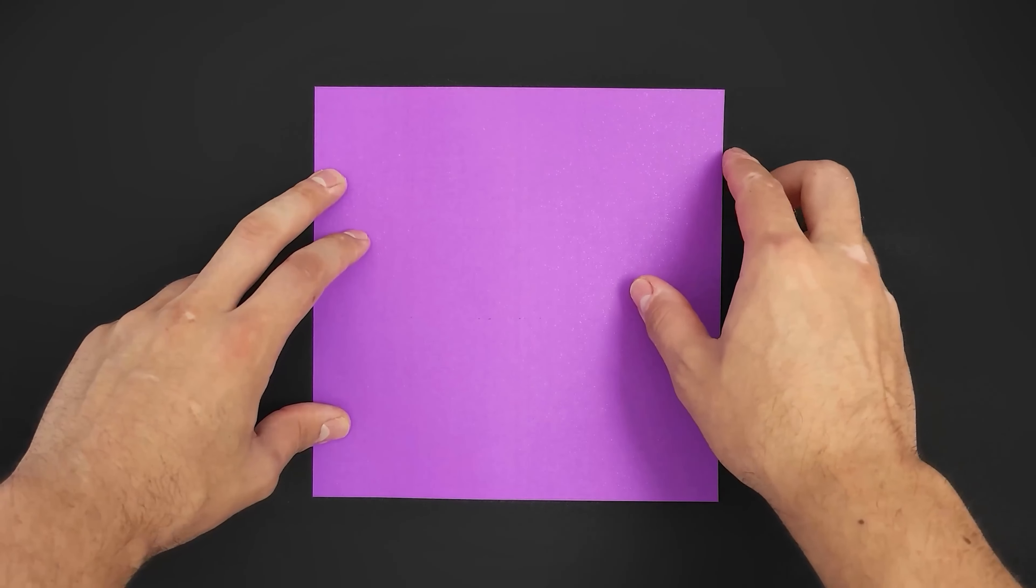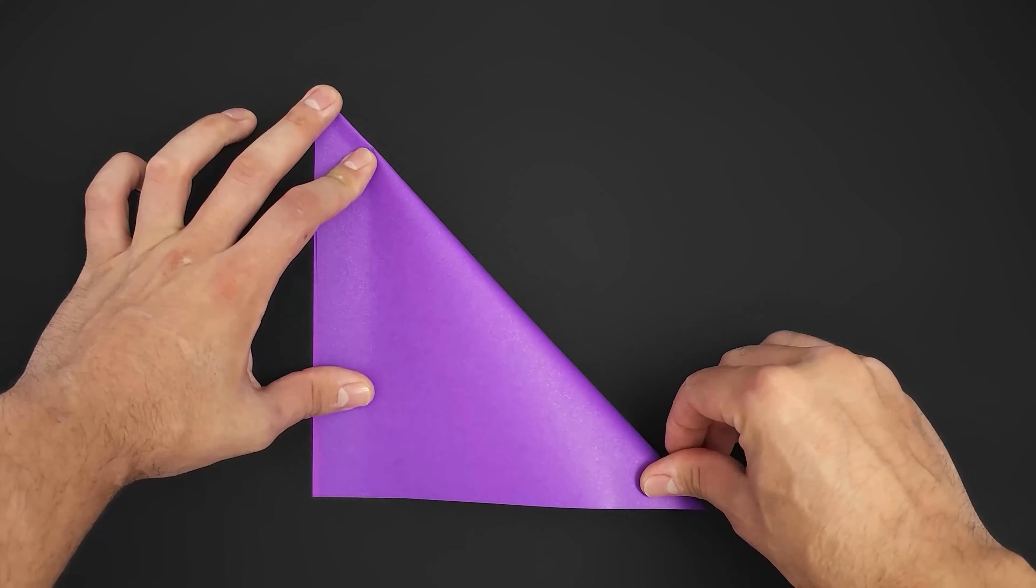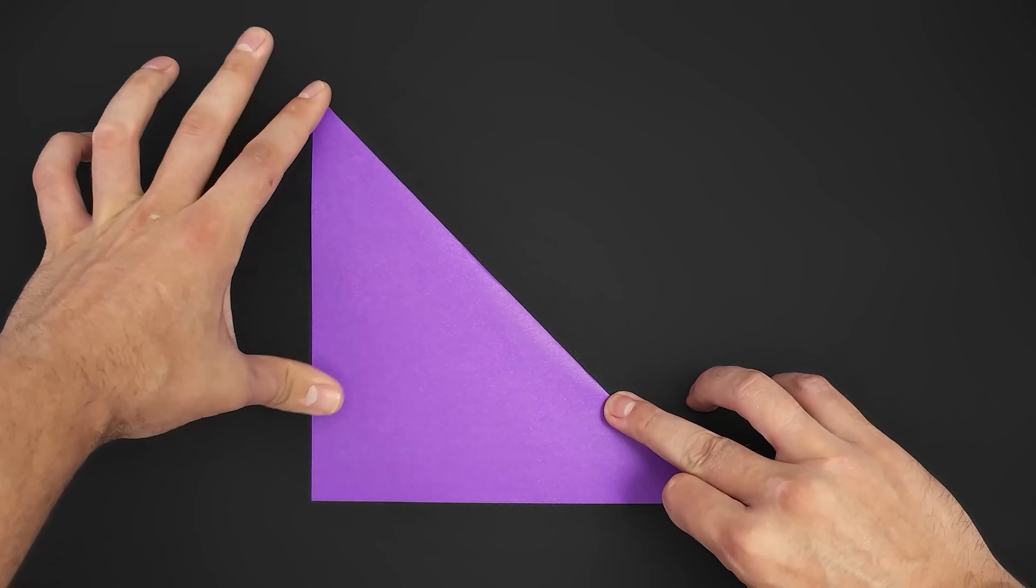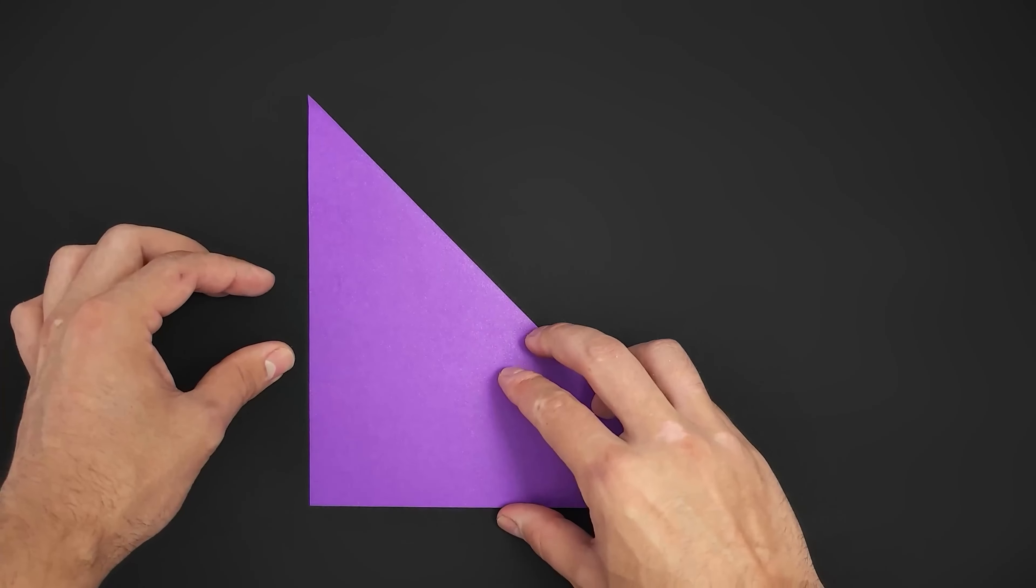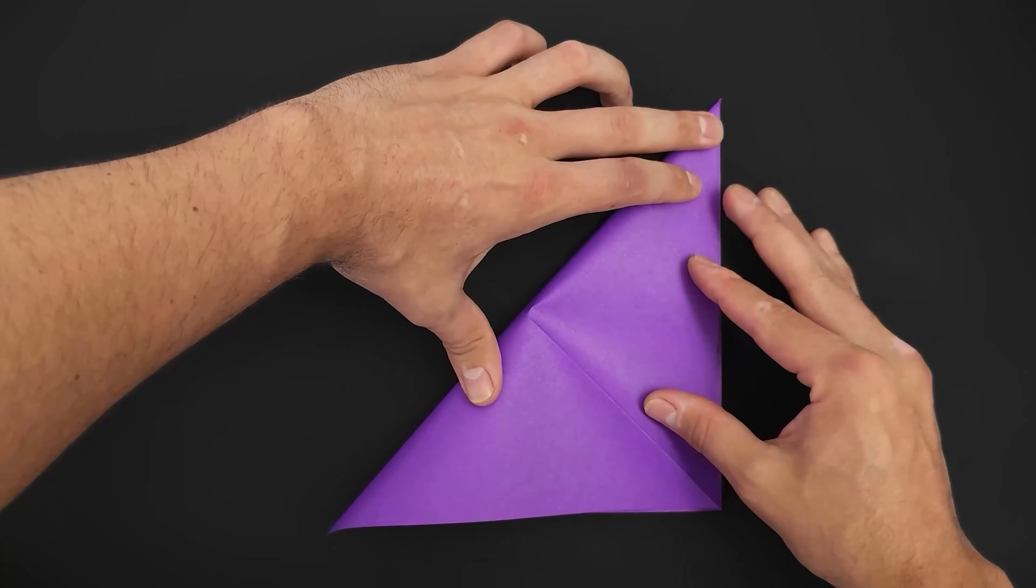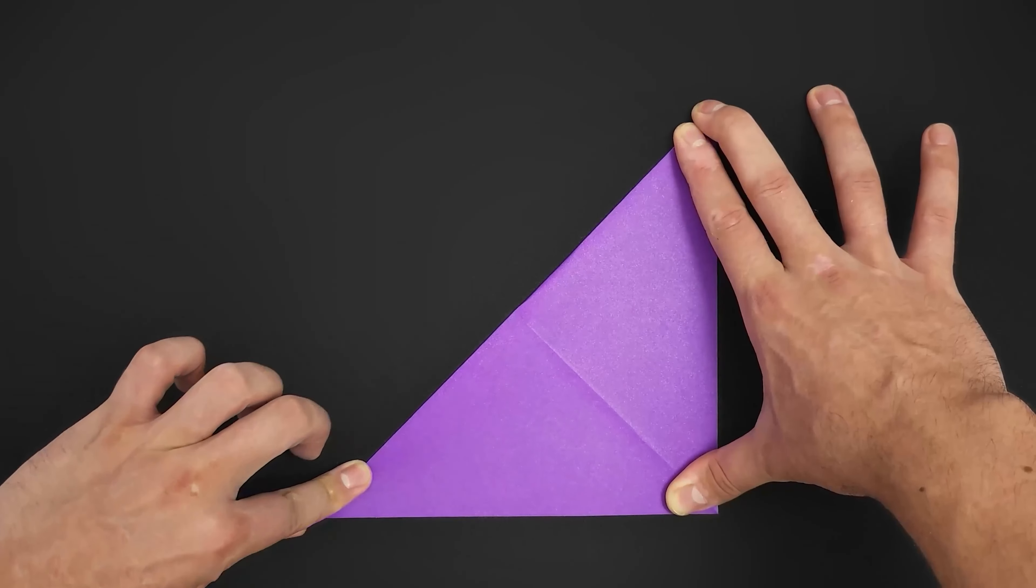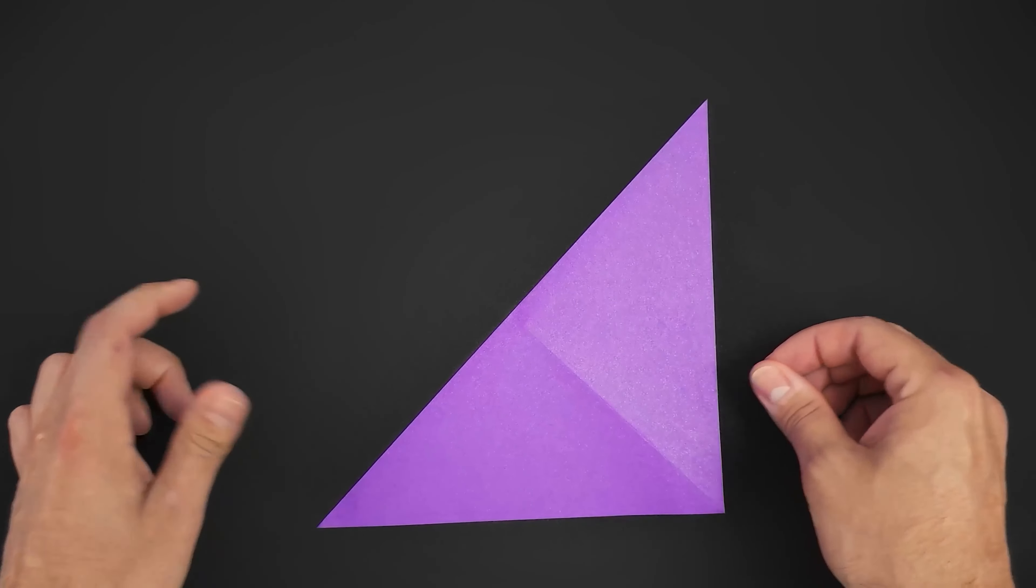Our first step is to fold the paper in half along both diagonals, making something like an X. So, first we bring one corner to the opposite corner, reinforce the fold and unfold. We fold along the opposite diagonal and unfold it too.